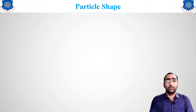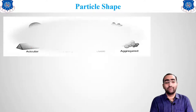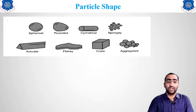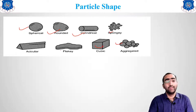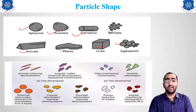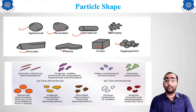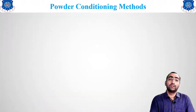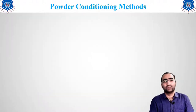We will now look at which different types of particle shapes are obtained from powder production methods. The shapes include: spherical, rounded, cylindrical, spongy, aggregated, cubic, flaky, and acicular. A three-dimensional view shows how these different particle types look, corresponding to the various powder production methods used.